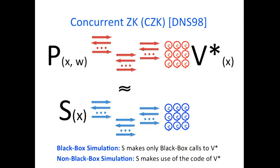Generically, there are two types of simulation: the black-box version and the non-black-box version. The black-box version is simpler and weaker — it restricts the simulator to only make black-box calls to the cheating verifier. Whereas non-black-box simulation places no restriction, and in particular, the simulator can make use of the code of the verifier itself.